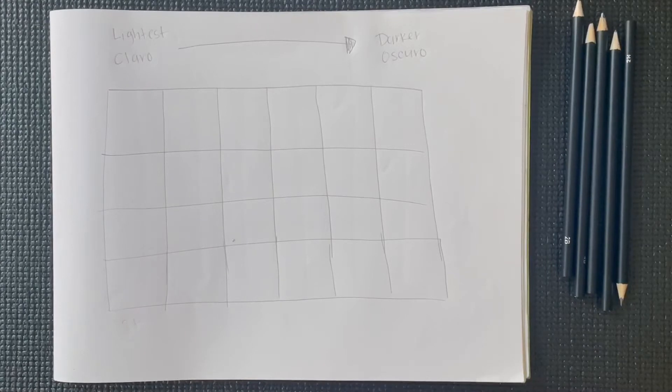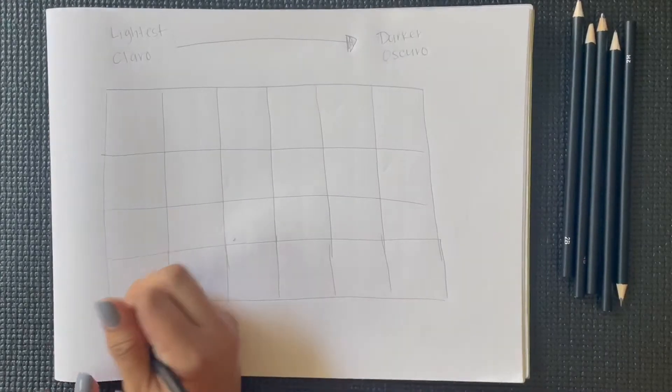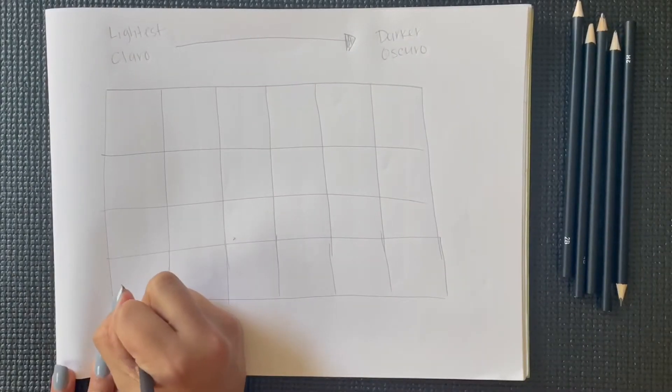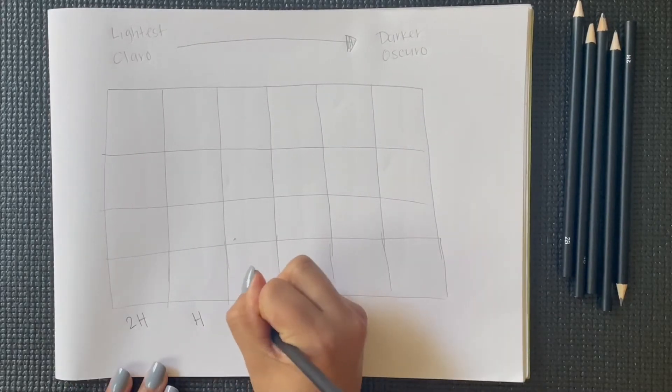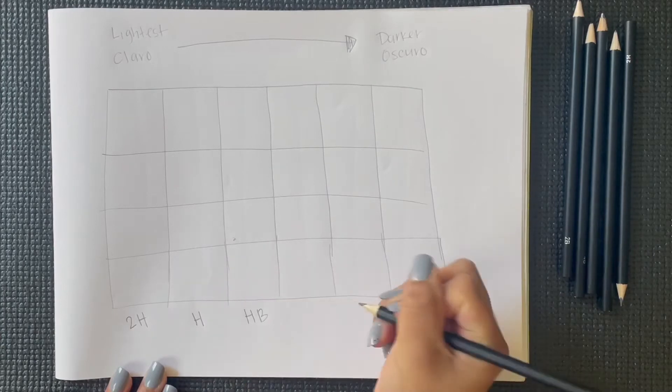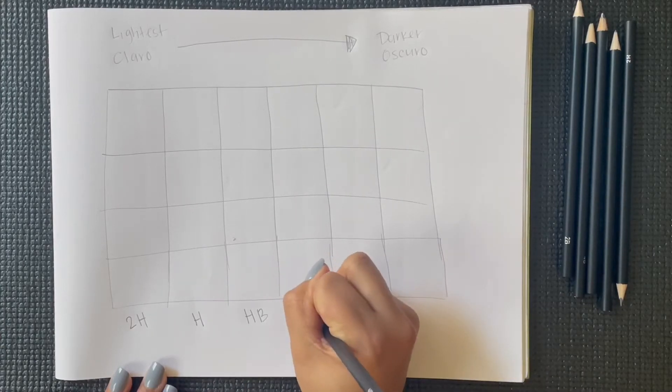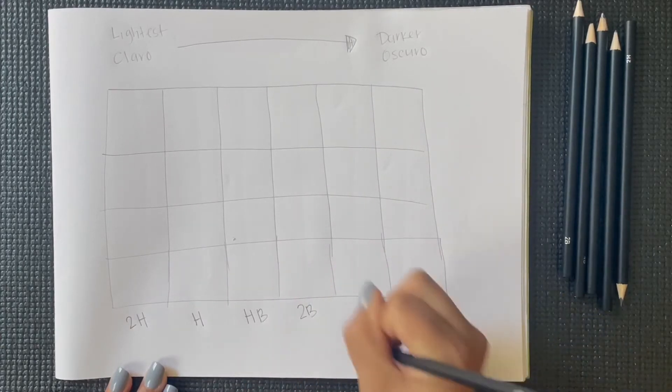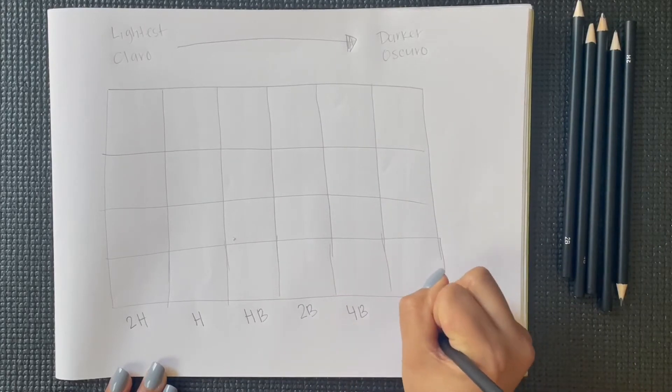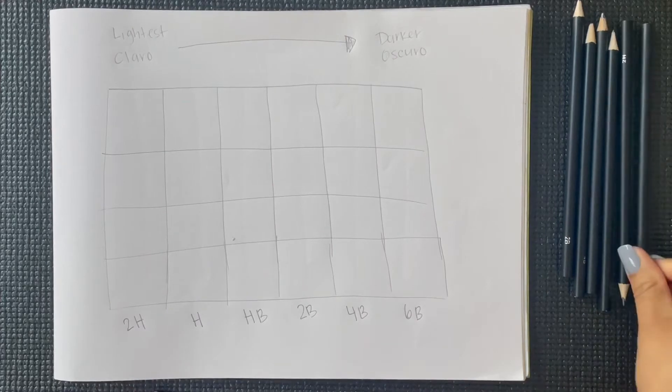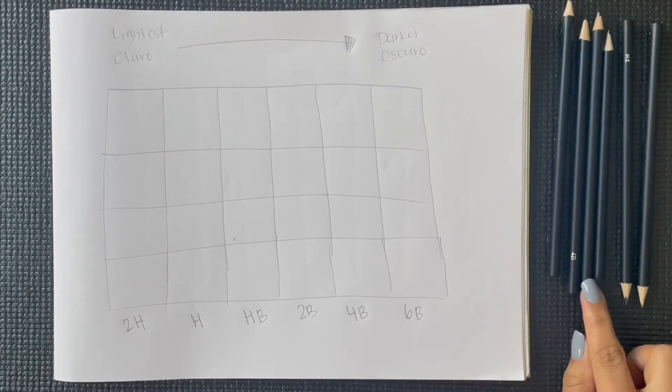We will be using the shading technique from the lightest to the darkest. Estaremos usando la técnica de sombreado de lo más claro a lo más oscuro. In the bottom, I'm writing the number of the pencil that we will be using. This number is located at the end of the pencil. En la parte de abajo, estamos escribiendo la numeración de lápiz que estaremos usando. Este número se encuentra en el lápiz a la mera orilla.